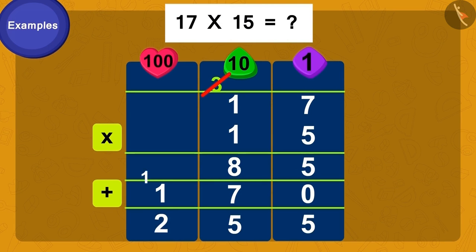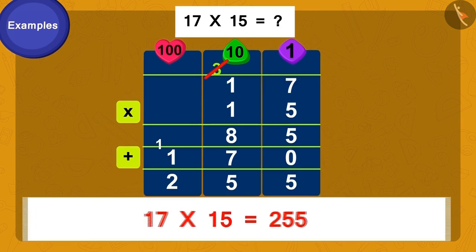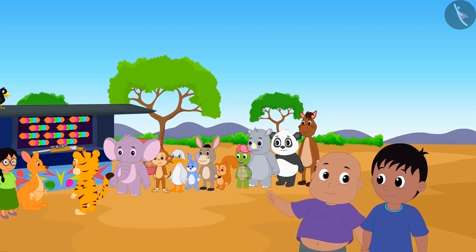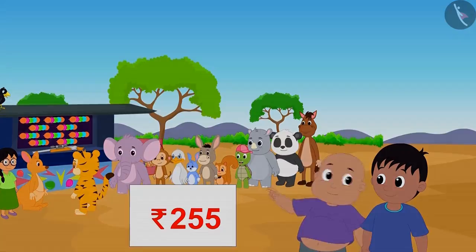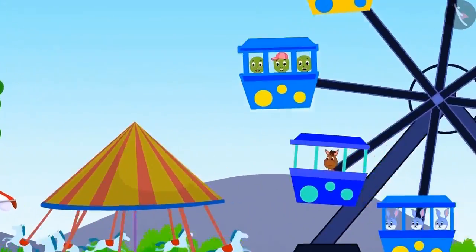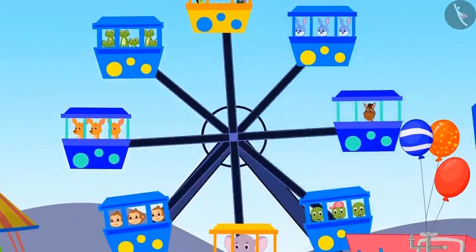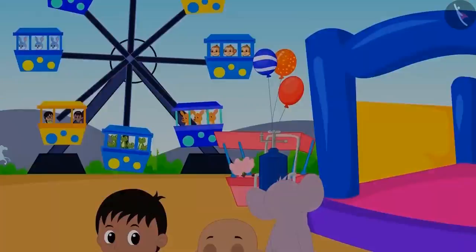Doing this, we get our answer: 17 times 15 is 255. Raju and Bablu will have to pay a total of 255 rupees. Raju and Bablu and their friends had a lot of fun at the fair.